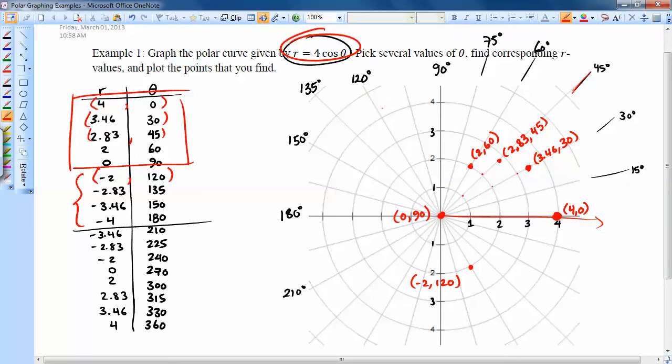The next point is negative 2.83 with 135 degrees. So here's 135 degrees, and anything that I plot along that red line that I just drew will be a positive radius. So instead of positive, I need negative. That's going to be going this direction instead. So negative 2.83, here's negative 2, here's negative 3, so right there is about negative 2.83. So this point, negative 2.83 comma positive 135 degrees.